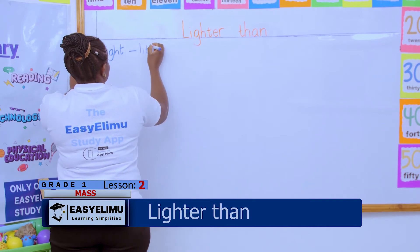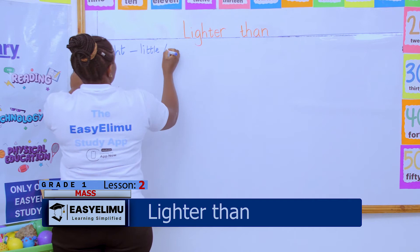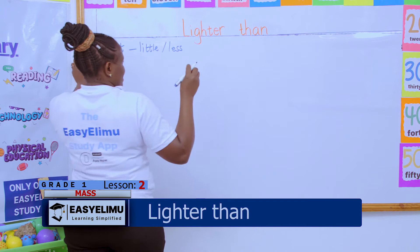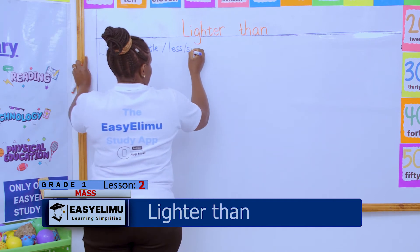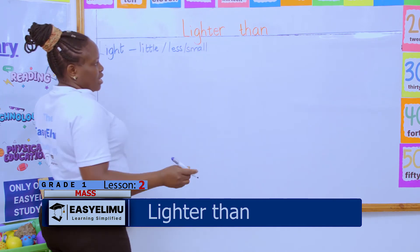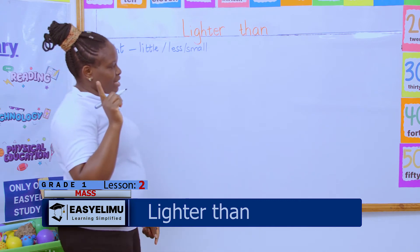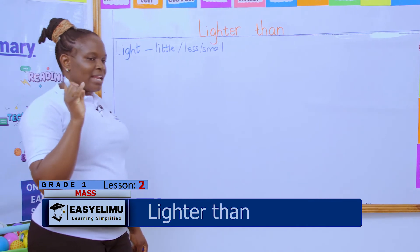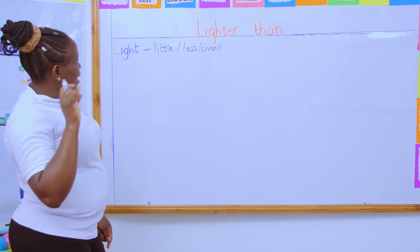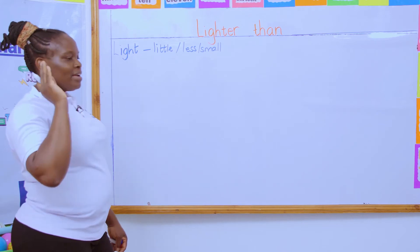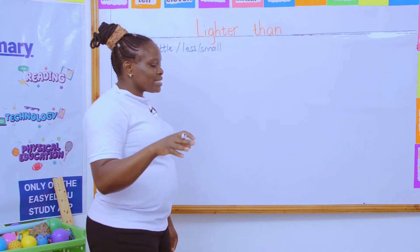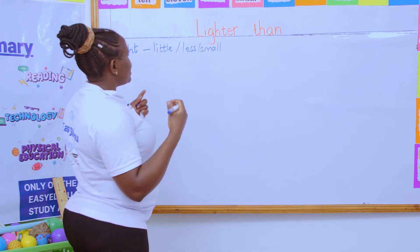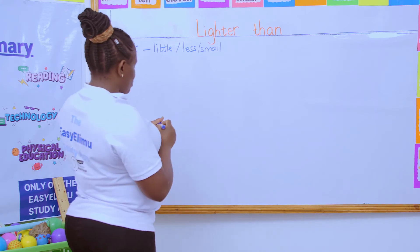Light means little or less. So 'lighter' is little, less, or small — it depends on what you are comparing. Do you remember our vocabulary? During the mass topic we're going to talk about: lighter than, heavier than, measure mass, beam balance, size, and weight. Those are the words you're going to be using every day.